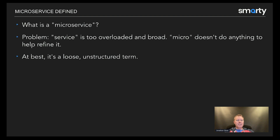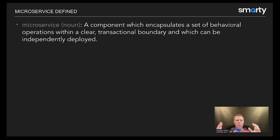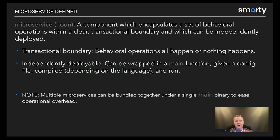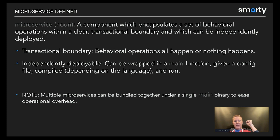Let's try to provide a definition. A microservice is a component which encapsulates a set of behavioral operations within a clear transactional boundary and which can be deployed independently. A transactional boundary means these things all happen altogether or none of them happen at all — it's a consistency mechanism to make sure you don't get into an inconsistent state in your database or other stateful systems. Beyond that, it's independently deployable — you can take this component, plop a config file next to it, and deploy or execute it. The ideal is: it's transactional, all or nothing, and deployable by itself.